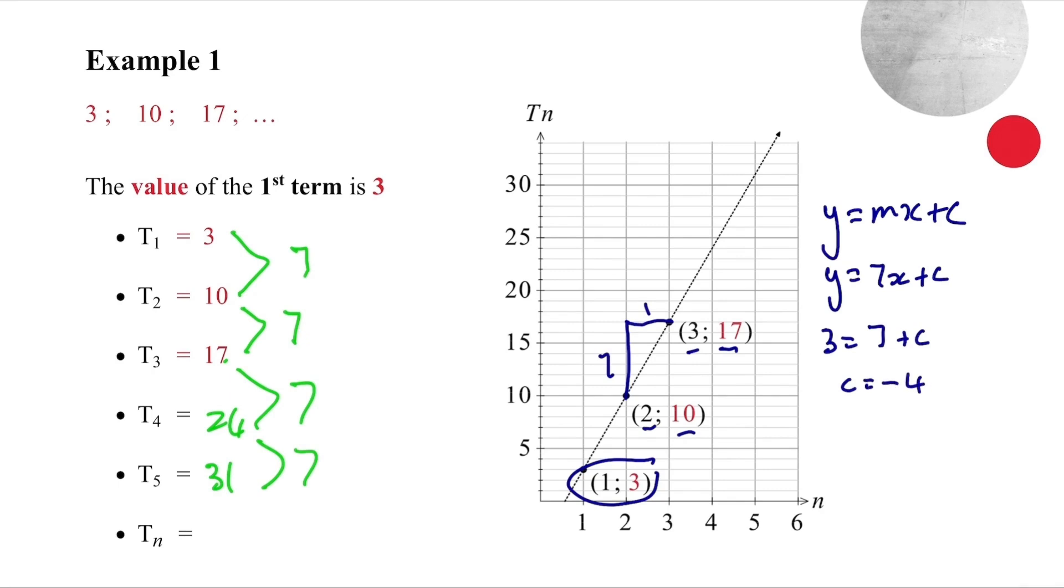Now the linear pattern is very similar. We're going to use the formula Tn equals an plus b. A is going to represent the constant change in the same way that m in the straight line represents the constant gradient. And we know that our constant change is seven. So this is going to be Tn equals seven n plus b. Now we can substitute and get three equals seven plus b. And therefore we know that b equals minus four. So our answer here is seven n minus four.